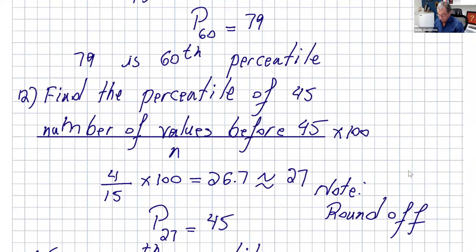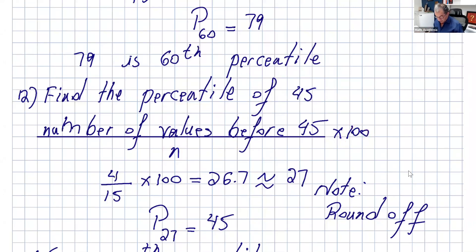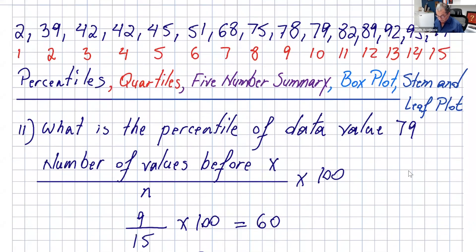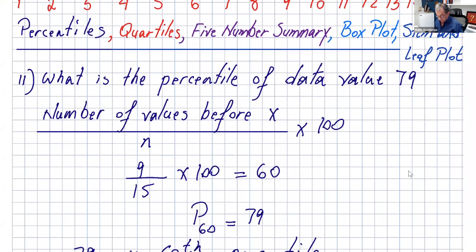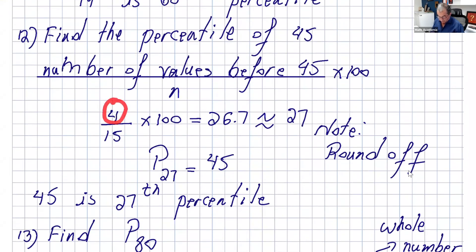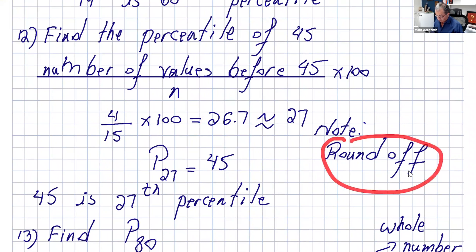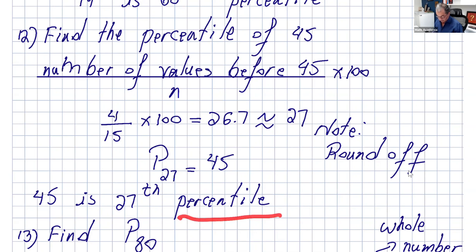This is always the percentage or the percentile. So the way you say that: 79 is the 60th percentile. That means 60 percent of the numbers in that simple data are less than 79. There's another example here: find the percentile of 45. Again, you take the number of values before 45, divide that by the sample size, and multiply it by 100. Before 45, we have four numbers. So, we do 4 divided by 15 times 100, and you get 26.7 — and always round it up. So you put 27, and the way you say that is p27 is 45, or 45 is the 27th percentile.